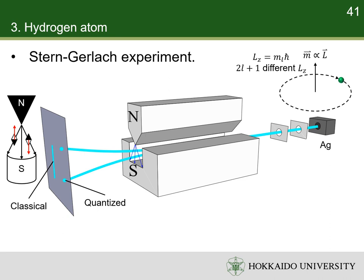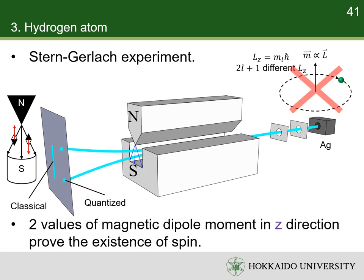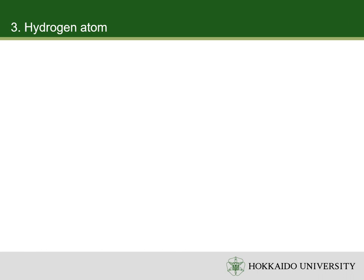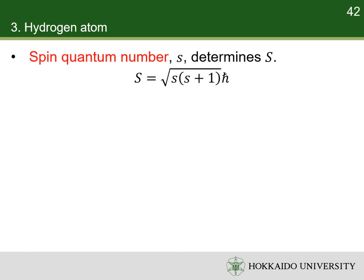However, silver atoms accumulate at only 2 points. Therefore, the angular momenta of silver atoms are not the result of spatial motion, but a new type of motion — that is, the spins of electrons. The magnitude of the spin angular momentum is determined by the spin quantum number s, which, like orbital angular momentum, depends on the azimuthal quantum number.